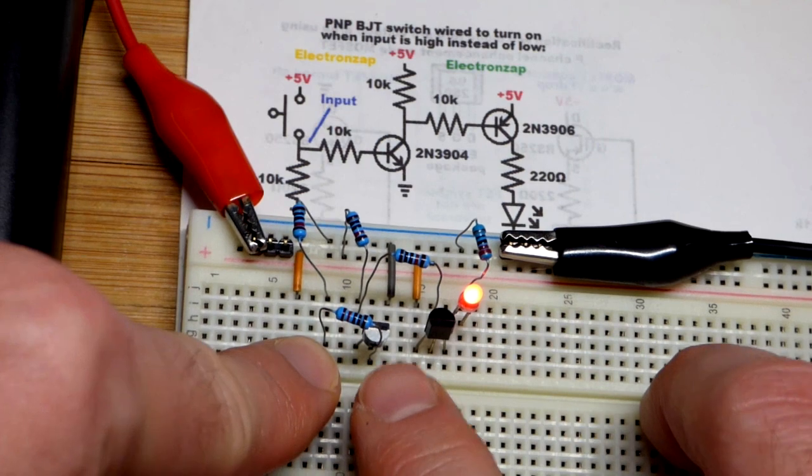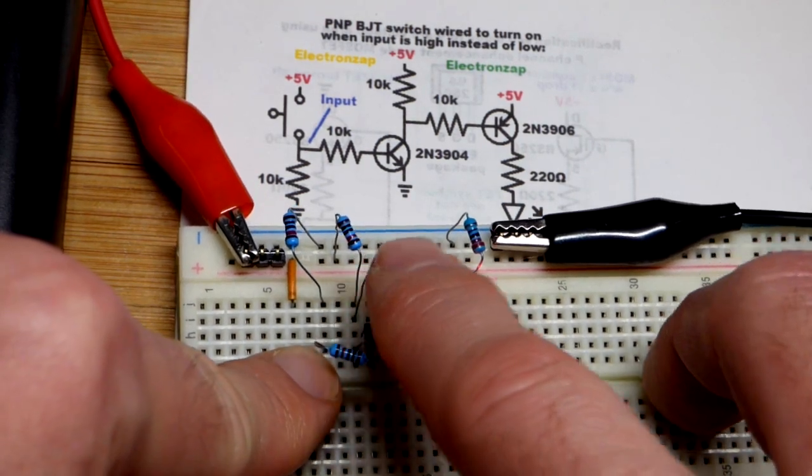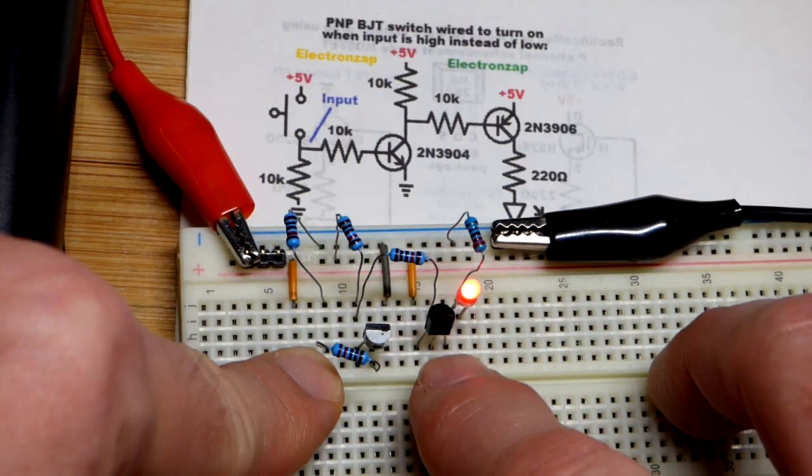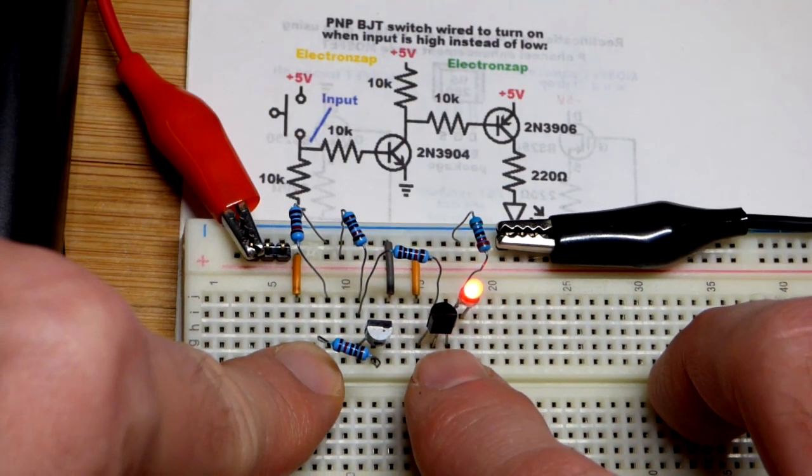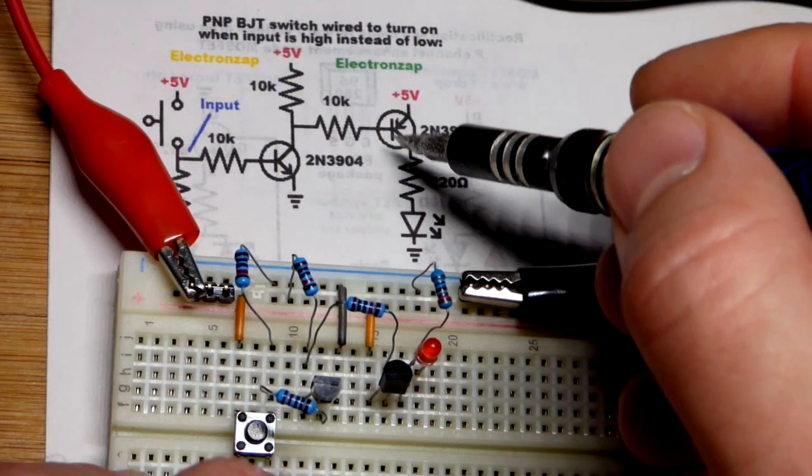When we close the switch we give a high input to the NPN bipolar junction transistor, and then it transfers over a low input to the PNP bipolar junction transistor, which turns it on.